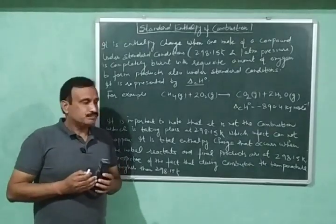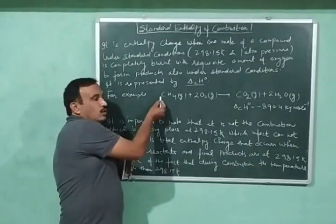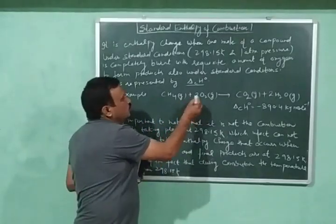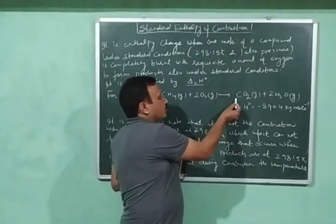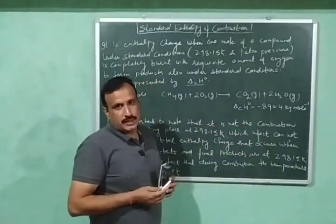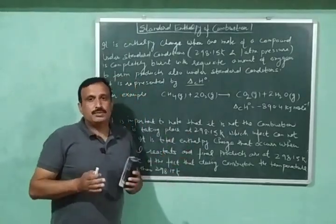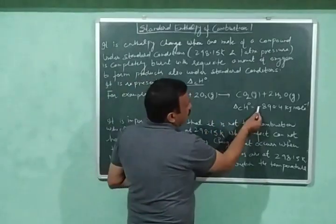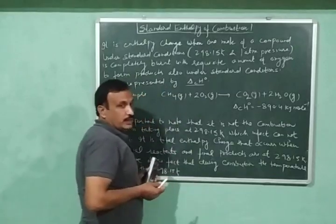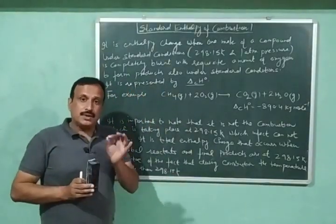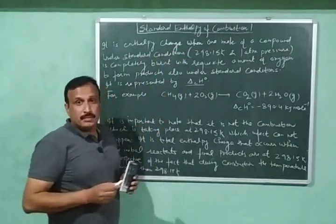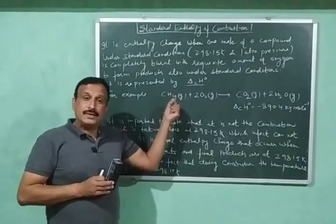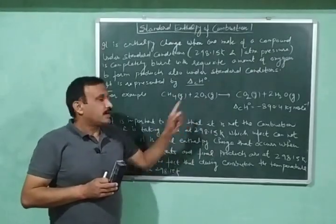Let us explain it with an example. In this example, 1 mole of methane is completely burnt with 2 moles of oxygen, giving us 1 mole of carbon dioxide and 2 moles of water vapours. The reactants and the products will be under standard conditions, and the enthalpy change of this reaction is minus 890.4 kJ per mole. This enthalpy change will be called the Standard Enthalpy of Combustion of Methane because 1 mole of methane is completely burnt in the required amount of oxygen.